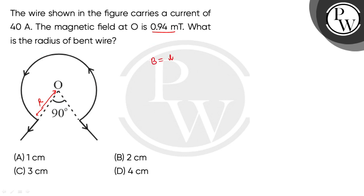The magnetic field due to a circular arc subtending an angle theta at the center is given by the formula: B equals mu naught i theta over 4 pi r.